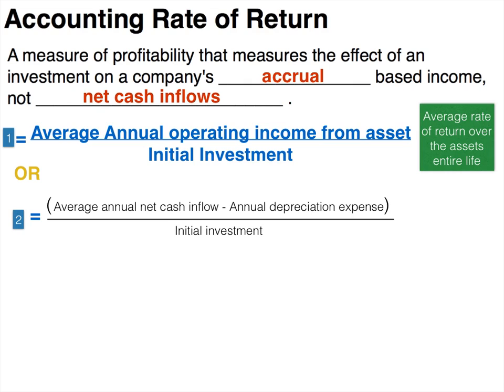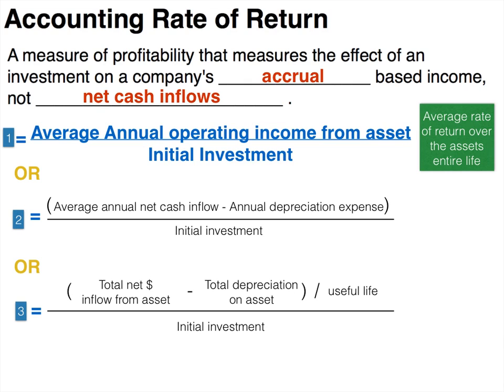The third form again changes the numerator. We take the total net cash inflows from the asset, subtract total depreciation on the asset, and divide that sum by the useful life. All of that is the numerator, and you still divide by the initial investment.